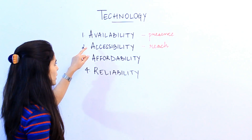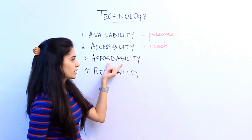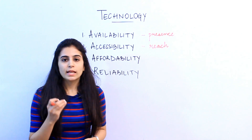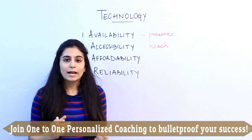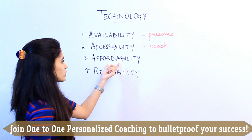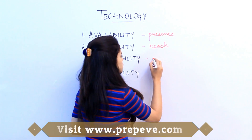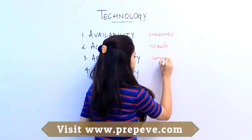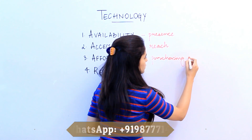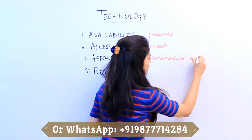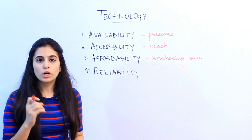Affordability. Accessibility is also dependent upon the affordability factor. Can you afford that mobile phone? Is it within your budget? Is it light on your pocket? All these questions matter. Affordability is your purchasing power — can you purchase that particular product?